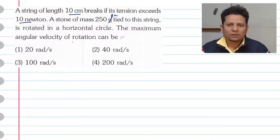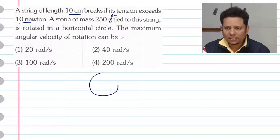The maximum angular velocity of rotation can be option A: 20, 40, 100, or 200 radian per second. Now the scenario is that you have a particle.